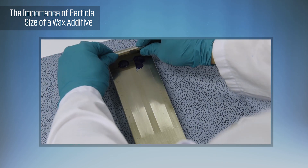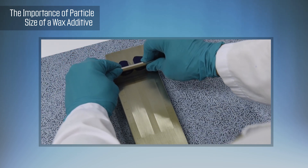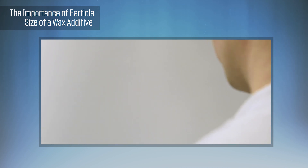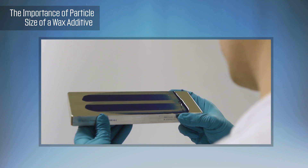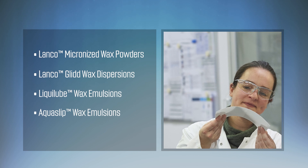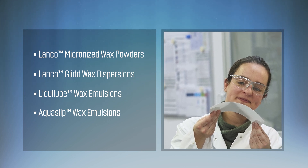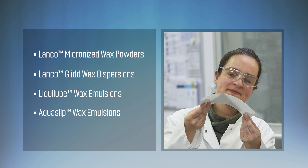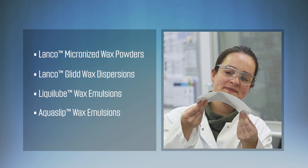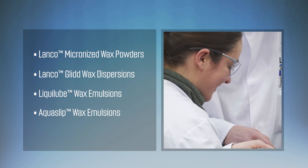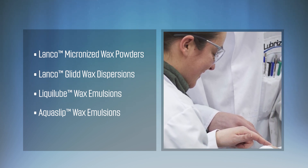At Lubrizol, extensive control procedures during the manufacturing process ensure that the optimal particle size and particle size distribution is produced in every bag, drum, or tote produced. In this way, Lubrizol's Lanco, Lanco Glid, LiquiLube, and Aquaslip products can be incorporated into formulations easily and deliver the same performance properties with little variation in every batch manufactured.